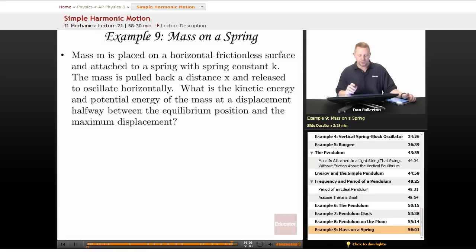Mass m is placed on a horizontal frictionless surface and attached to a spring with spring constant k. The mass is pulled back a distance x and released to oscillate horizontally. What is the kinetic energy and potential energy of the mass at a displacement halfway between the equilibrium position and maximum displacement?